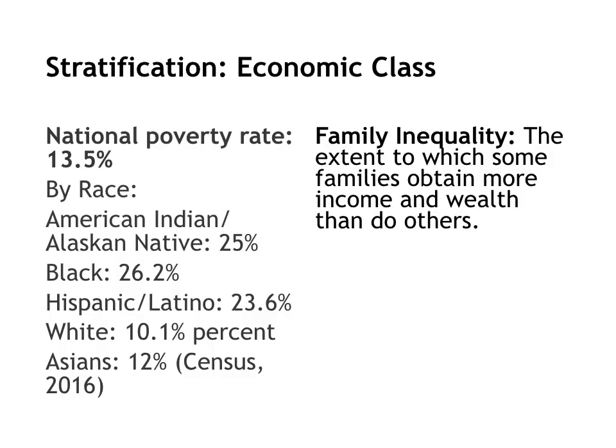One way to measure stratification in society is to look at things like the official poverty rate. Poverty is defined as a state in which income is insufficient to provide basic life necessities, such as food, shelter, or medical care. The United States' official poverty rate, according to the 2016 census, is 13.5%. The US also experiences significant racial stratification, with American Indian, Black, and Latino households being more likely to be impoverished than Asian households, and Asian households more likely to be impoverished than white-headed households. This creates significant family inequality, defined as the extent to which some families obtain more income and wealth than do others.